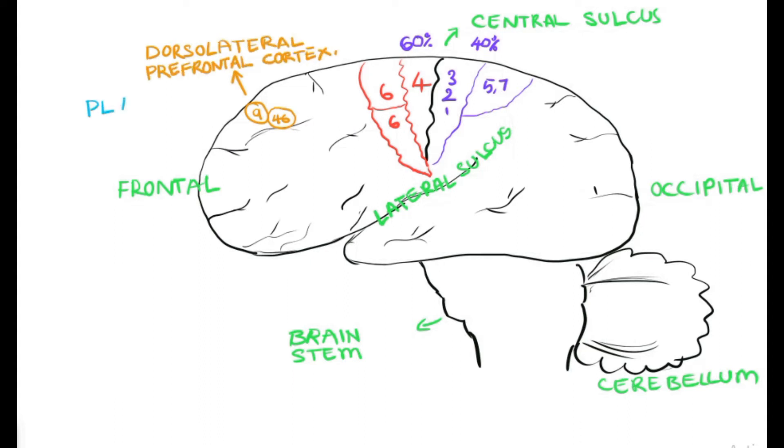The dorsolateral prefrontal cortex, area number 9 and 46, is the main area for the initiation of the planning or planning of the motor action.